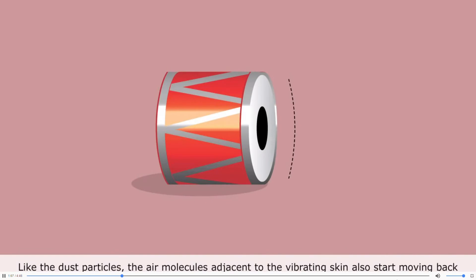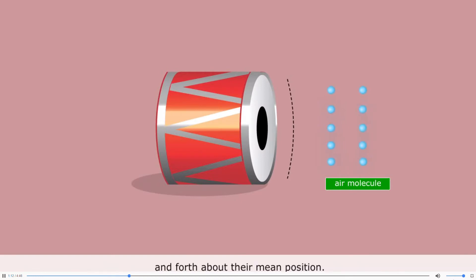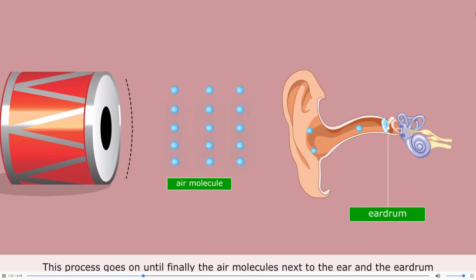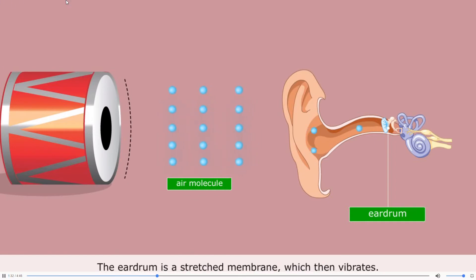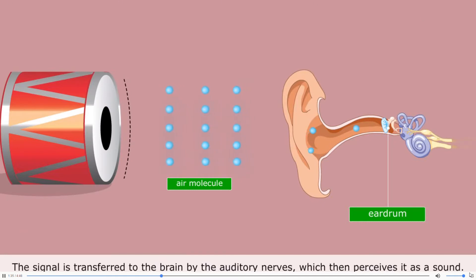Like the dust particles, the air molecules adjacent to the vibrating skin also start moving back and forth about their mean position. This causes the neighboring air molecules to oscillate. This process goes on until finally the air molecules next to the ear and the eardrum inside the ear oscillate back and forth. The eardrum is a stretched membrane which then vibrates. The signal is transferred to the brain by the auditory nerves which then perceives it as a sound.